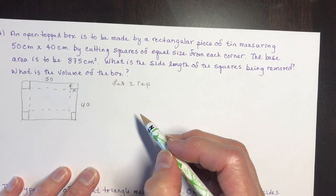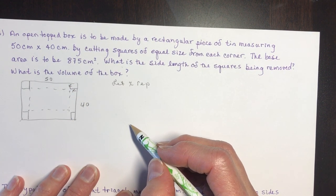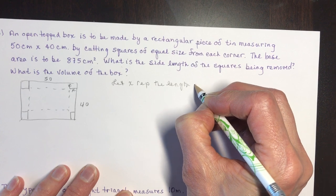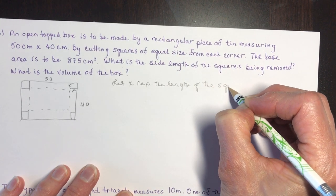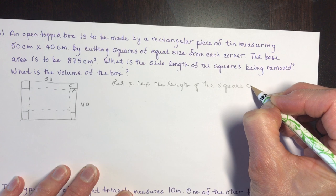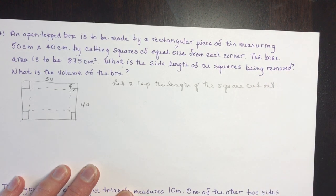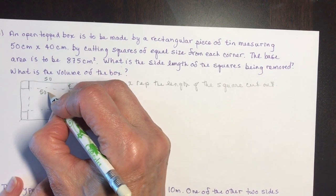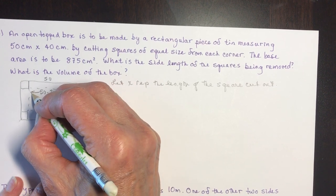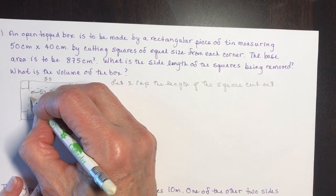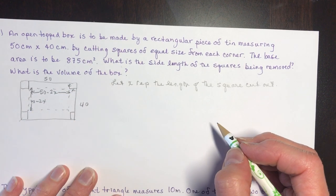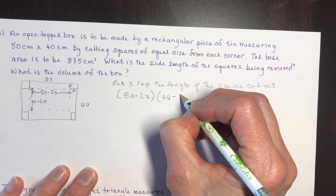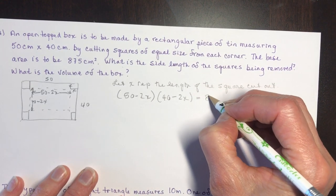Let x represent the side length of the square cut out. We have 50 minus 2x for one dimension and 40 minus 2x for the other width. So (50 − 2x)(40 − 2x) equals 875 — that's the equation we need to solve for x.